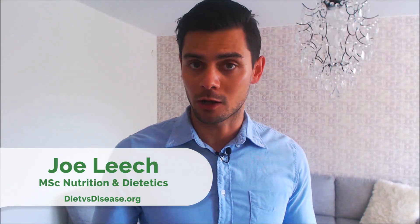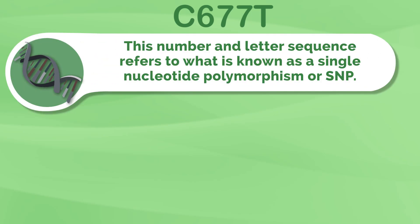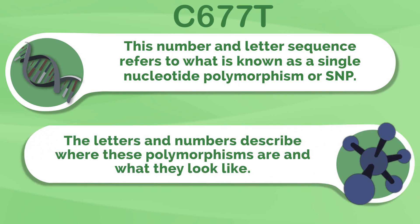MTHFR mutations are actually quite common, and researchers suspect there are, at the very least, 30 different types. C677T and A1298C are the most well-studied and well-tested of the lot. This number and letter sequence refers to what is known as a single nucleotide polymorphism, or SNP. The letters and numbers describe where these polymorphisms are and what they look like.